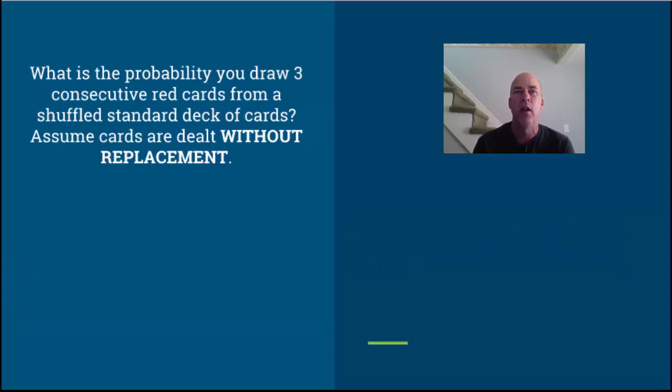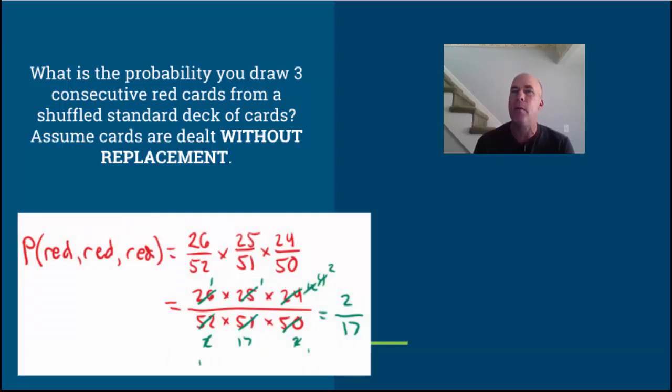Let's look at one last example. What is the probability that you draw three consecutive red cards from a shuffled standard deck of cards? Again, without replacement. Think about it - we're drawing three cards, so it's a three-event multi-stage experiment. We start with 52 cards. Then we draw one. How many are left? How many reds would there be?